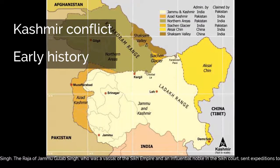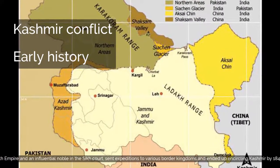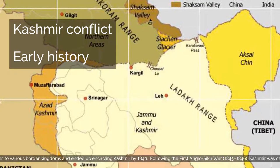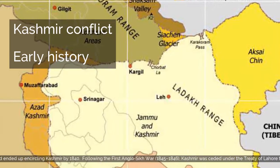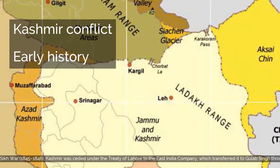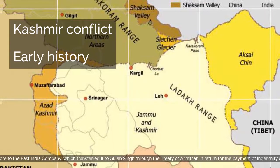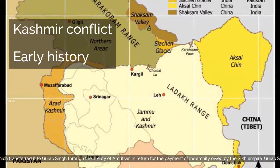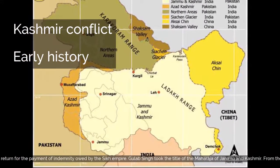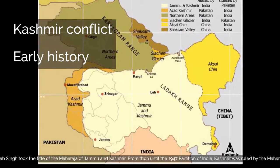The Raja of Jammu, Gulab Singh, who was a vassal of the Sikh Empire and an influential noble in the Sikh court, sent expeditions to various border kingdoms and ended up encircling Kashmir by 1840. Following the First Anglo-Sikh War of 1845–1846, Kashmir was ceded under the Treaty of Lahore to the East India Company, which transferred it to Gulab Singh through the Treaty of Amritsar in return for payment of indemnity owed by the Sikh Empire. Gulab Singh took the title of Maharaja of Jammu and Kashmir.